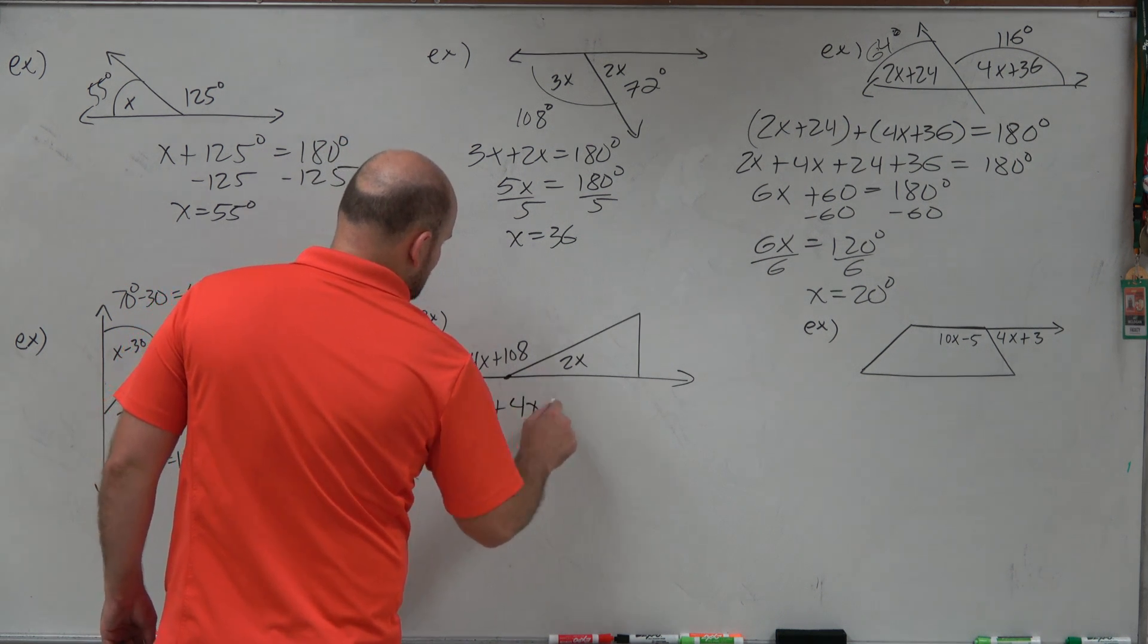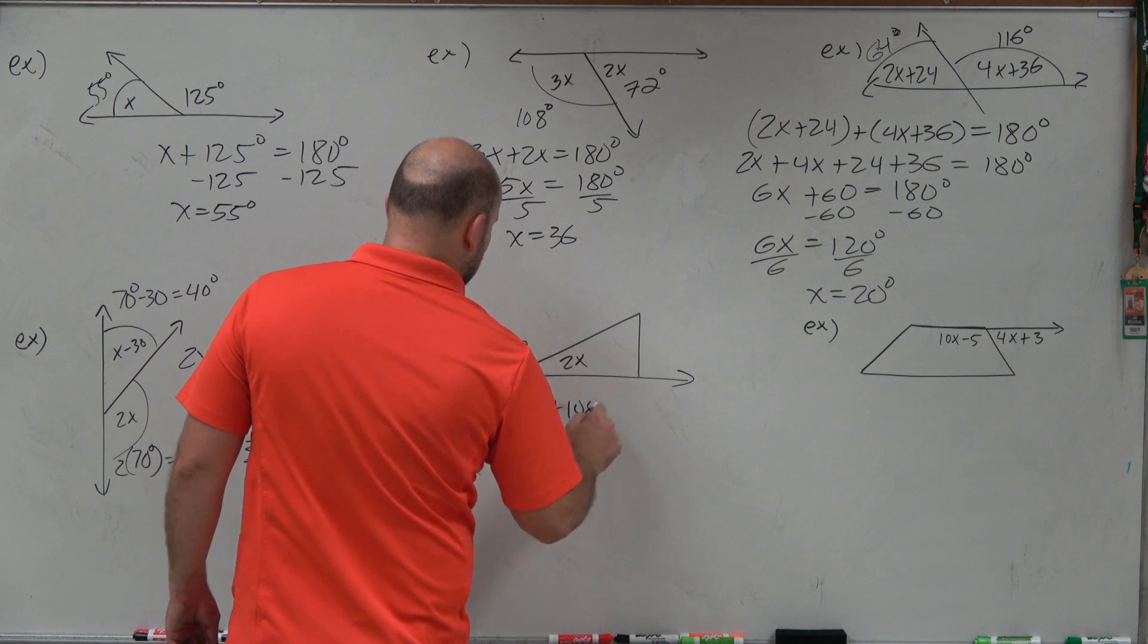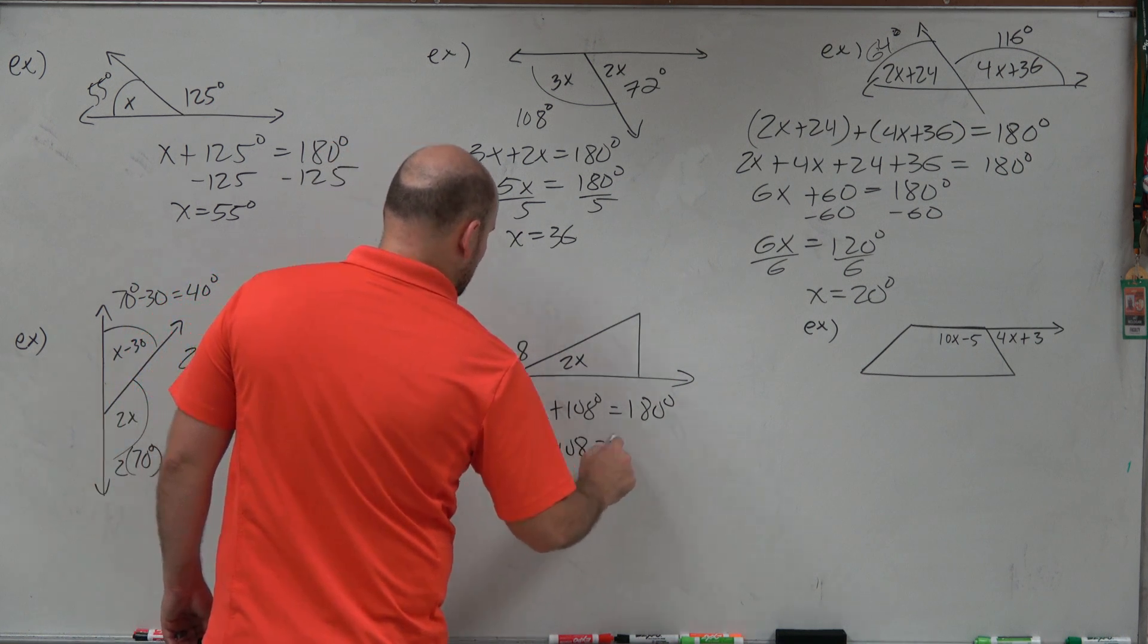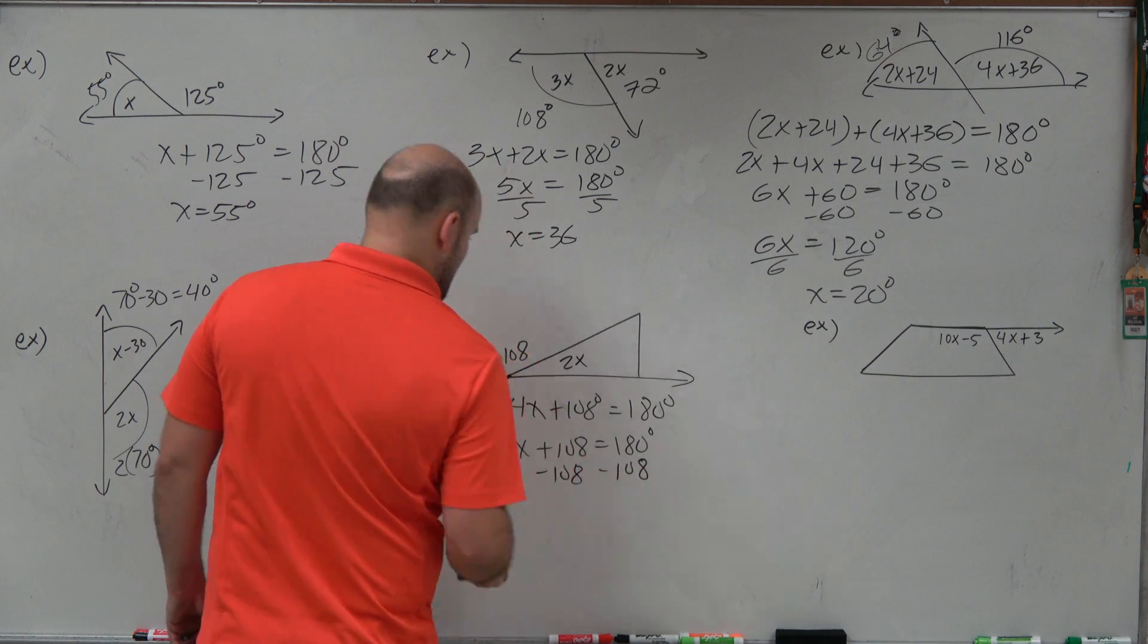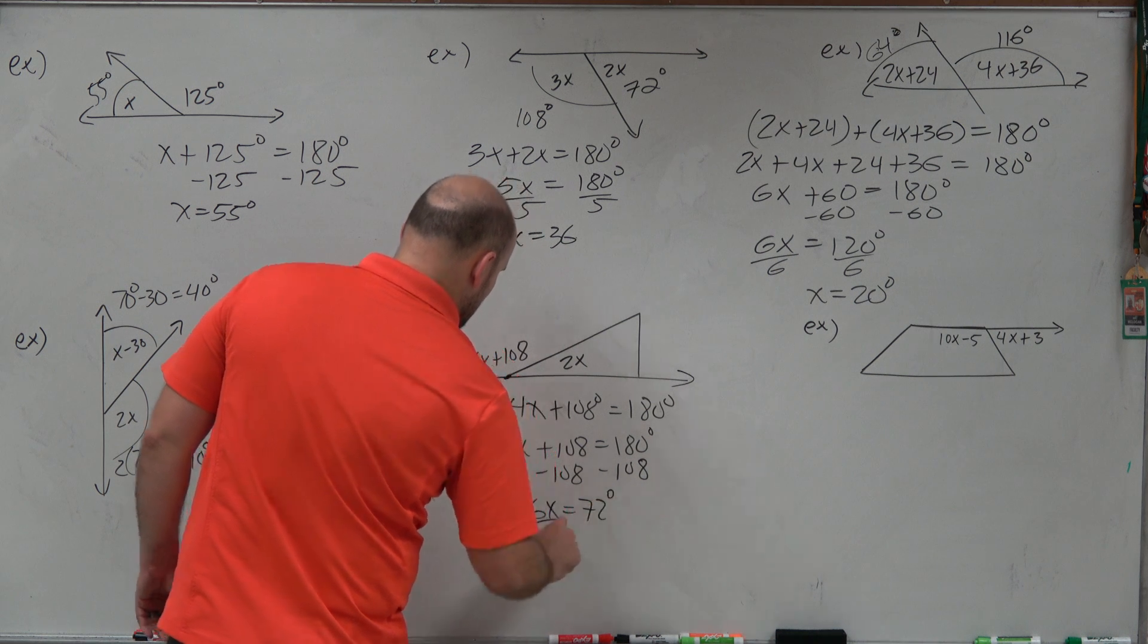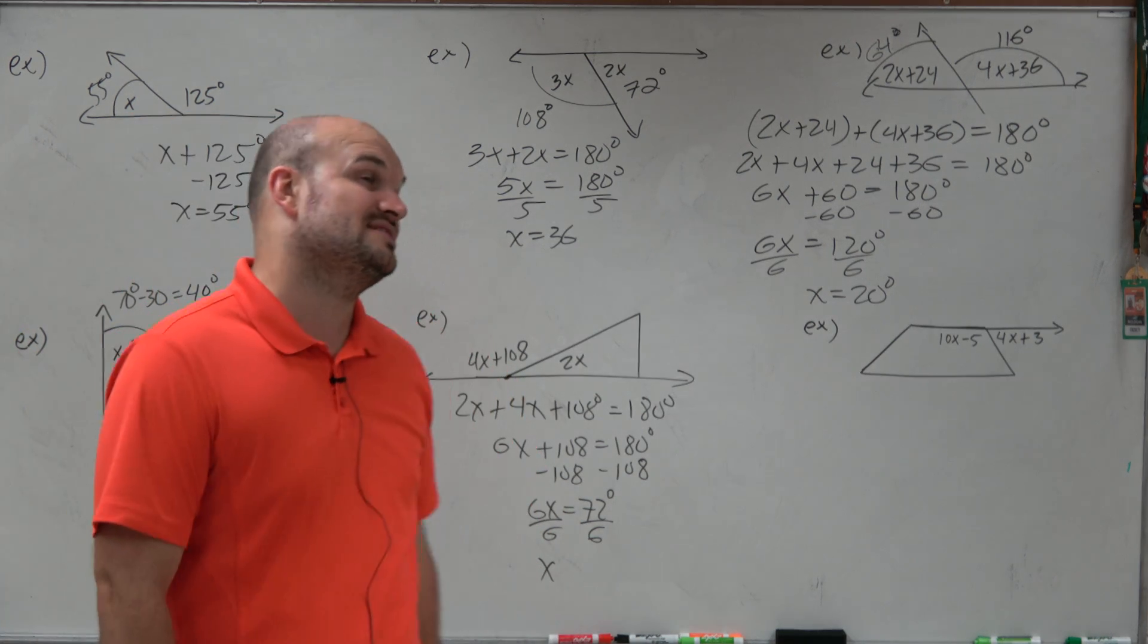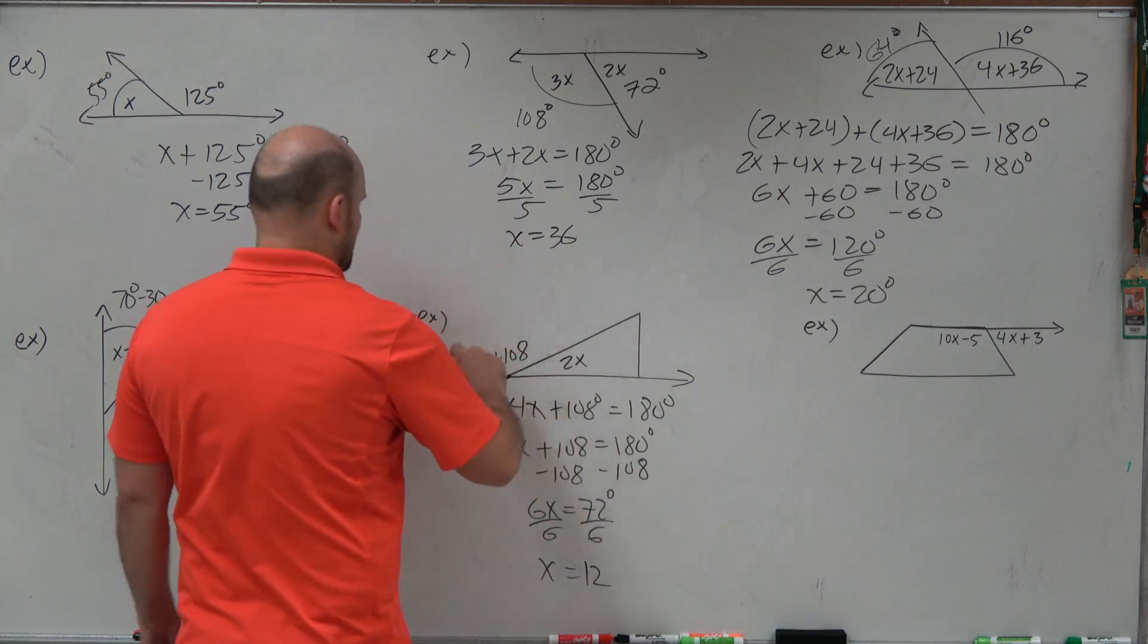2x plus 4x plus 108 equals 180 degrees. So therefore, that's 6x plus 108 equals 180. Subtract 108, subtract 108. 6x is going to equal 72 degrees. Divide by 6, divide by 6. 6 goes into 60 10 times, so 66, 11, 72 would be 12.